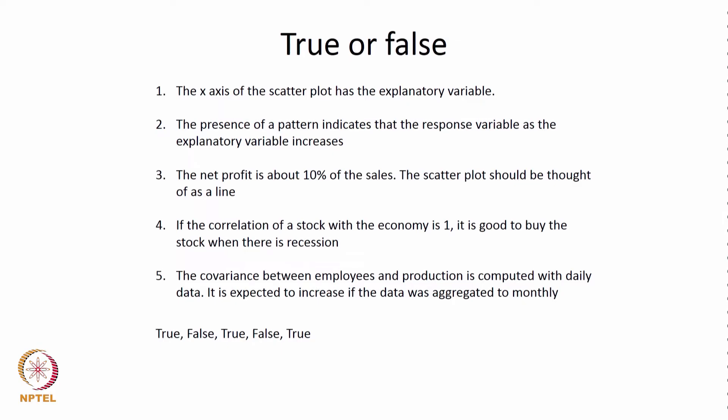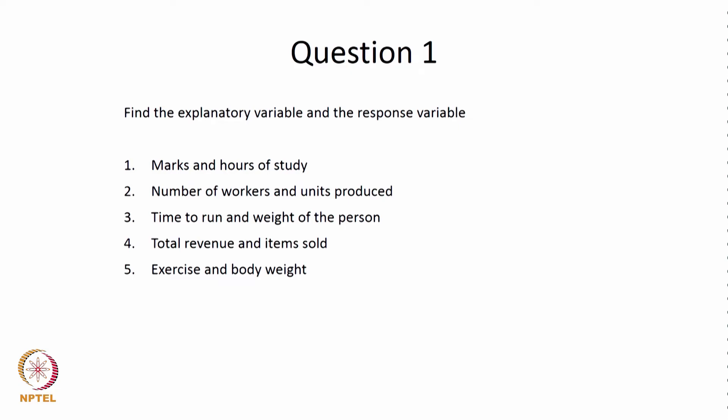It also helps us understand what is an explanatory variable and what is the dependent variable. Let us move to a simple question: find the explanatory variable and the response variable. The explanatory variable is the x variable and the response variable is the y variable. First example: marks obtained in an exam with hours of study. As the student puts in more hours of study the mark is expected to increase. So hours of study is the explanatory variable while marks obtained is the response variable.